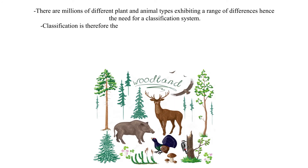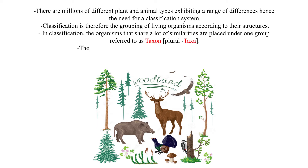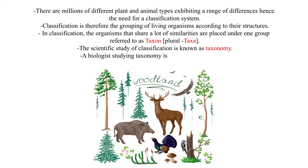Classification is therefore the grouping of living organisms according to their structures. In classification, organisms that share a lot of similarities are placed under one group referred to as a taxon (plural: taxa). The scientific study of classification is known as taxonomy, and a biologist studying taxonomy is known as a taxonomist.